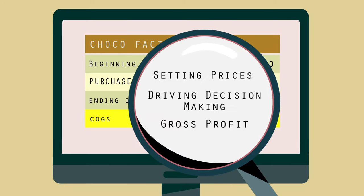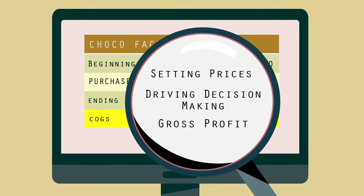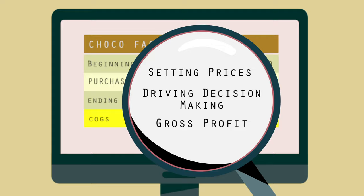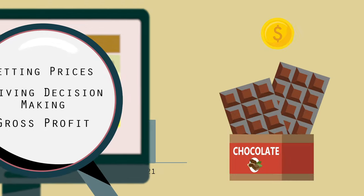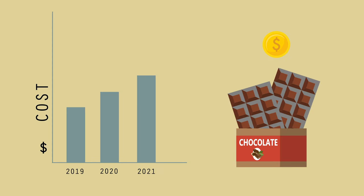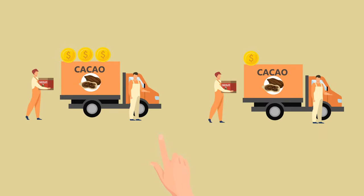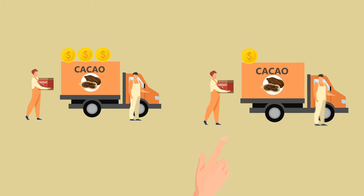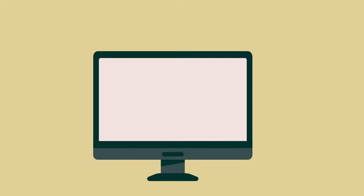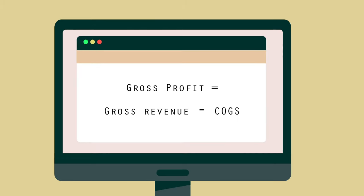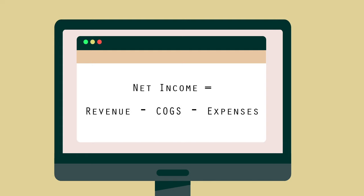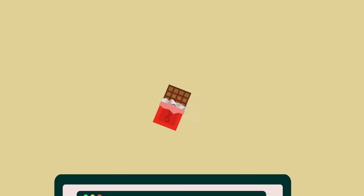Understanding the cost of goods sold is important for many reasons, including setting prices that leave healthy profit margins, driving important decision-making like finding new vendors with better material prices, and is a key component in determining a business's gross profit and net income.